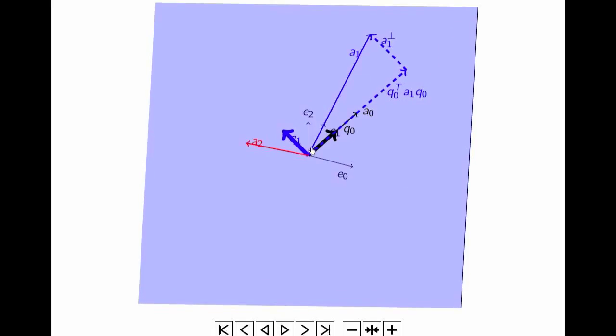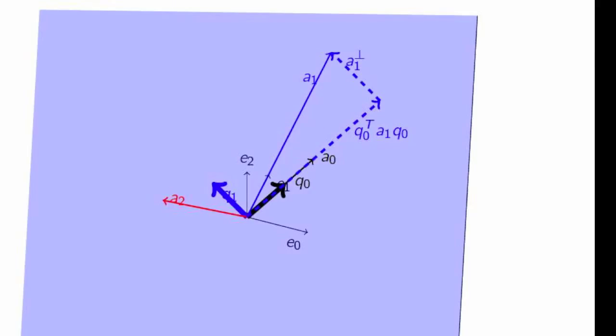What we have here is the vector A1, which is of some length. The component of A1 in the direction of the vector q0 is given by the inner product of q0 with A1. That's the length times the vector q0, which is of length 1. So that gives us this dashed line right here. And then if we take that vector and we subtract it off of A1, we get the vector perpendicular. This dashed vector plus that vector is equal to A1.